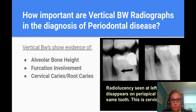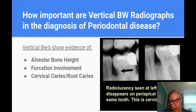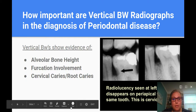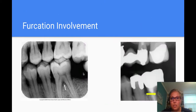We have to remember we want to try to prevent this from happening in the first place. This is rather large — but what if we had taken this vertical bitewing months or a year before and caught it when it was really small? Or if we were taking vertical bitewings and saw that this was a vulnerable area, maybe it could have been prevented. We could have put the patient on a stronger fluoride at home, emphasized tighter recalls, and talked to them about ways to keep this clean in between. The value of a vertical bitewing — there is no real price you can put on it.